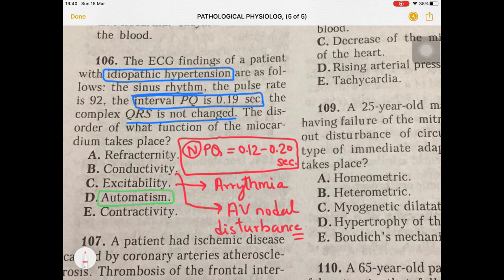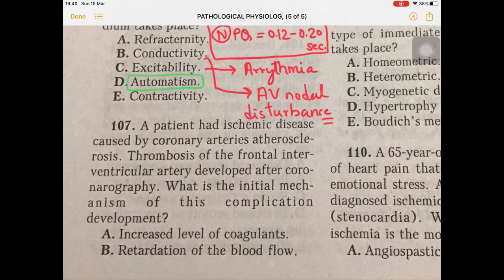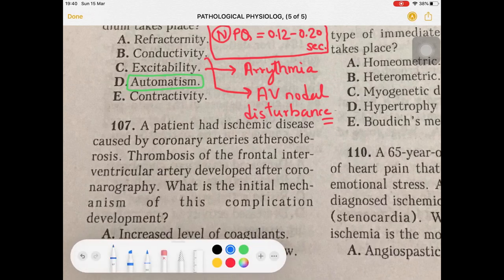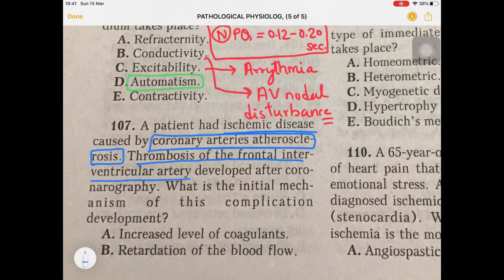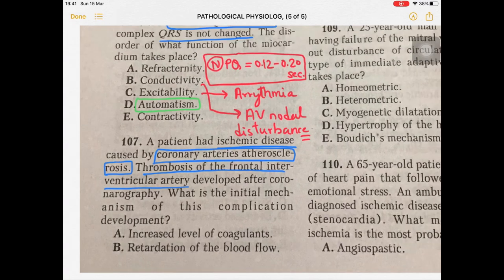Let's move on to question 107. A patient had ischemic heart disease caused by coronary artery atherosclerosis. The patient was having ischemic disease and coronary artery atherosclerosis — the plaque can be made up of cholesterol or LDL (low density lipoprotein), also called bad cholesterol. Thrombosis of the frontal interventricular artery occurred. After coronography, what is the initial mechanism?